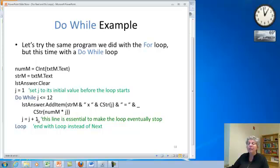And finally I have to put the j equals j plus one, the increment for j, in there myself. Visual Basic is not going to do it for me. And finally I end up my loop with the word loop instead of the word next, which we use to end the for loop.